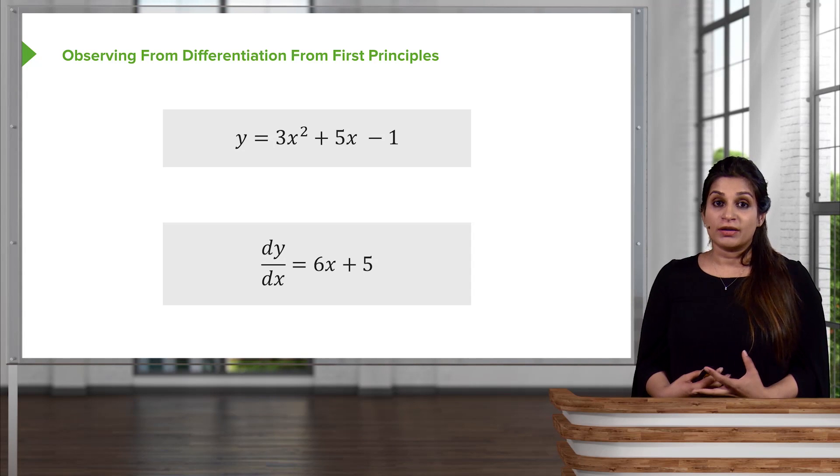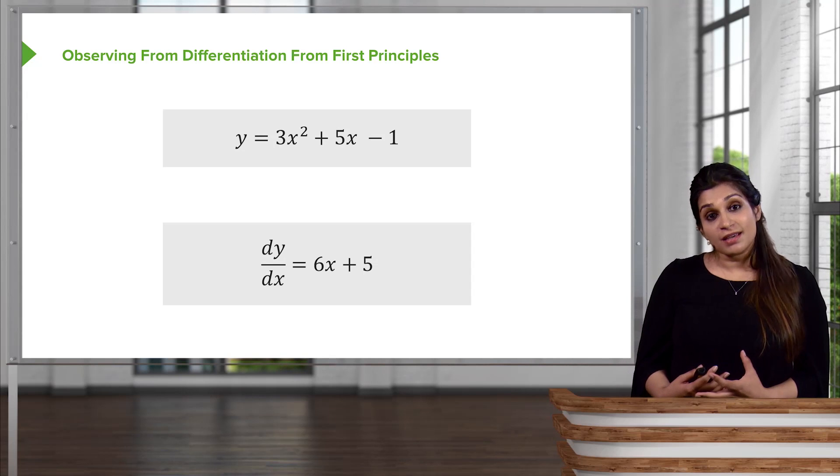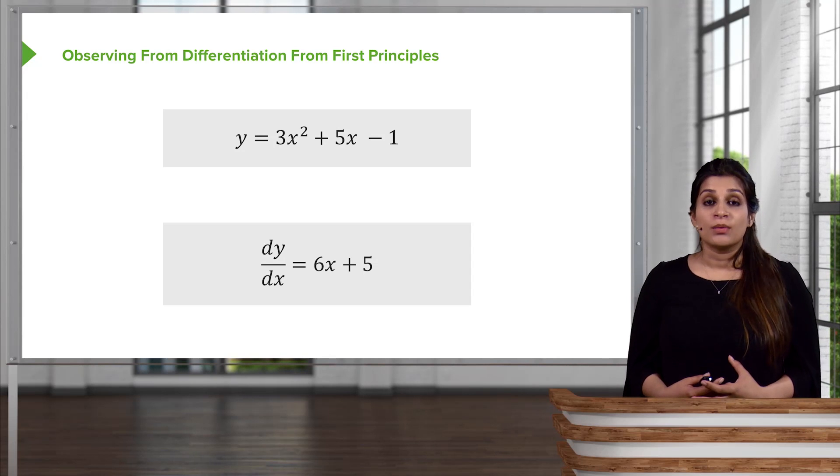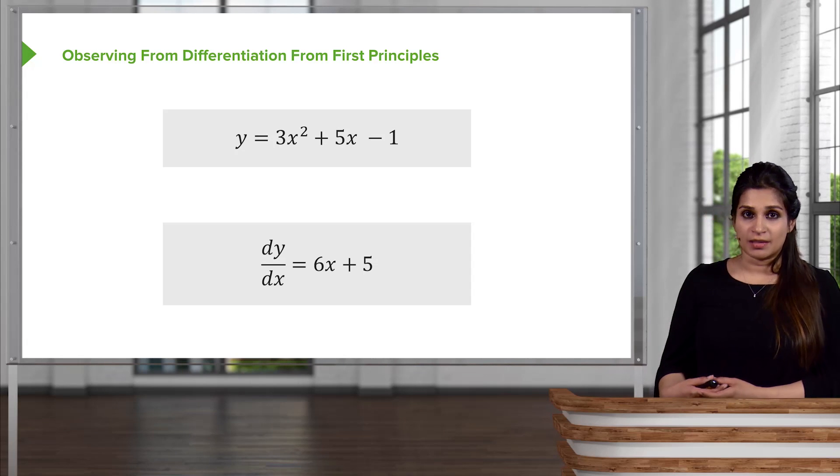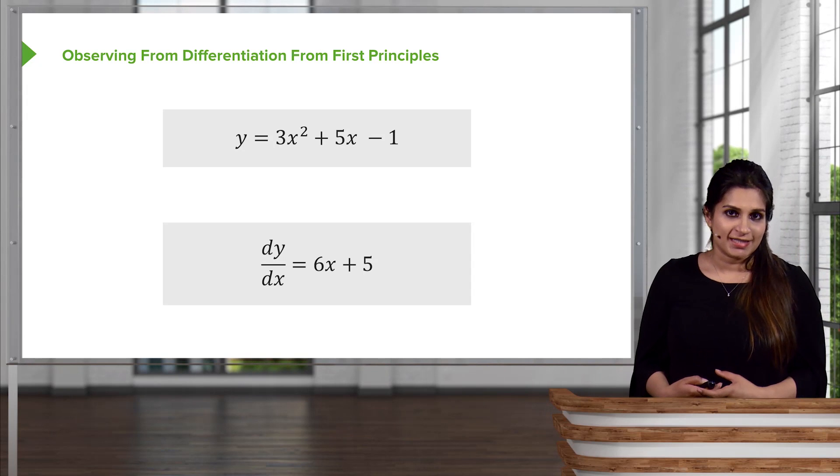But thankfully, modern calculus has much faster ways of doing this. We discussed that faster way previously, where you bring the power down and multiply it, and you decrease the power by 1. Remember, any constants at the end go to zero or just disappear.